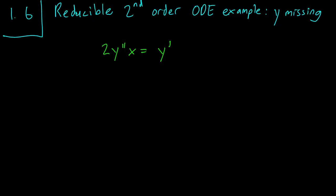Hello class. This is chapter 1.6 and in this video we are going to go through an example of reducing a second-order differential equation. This is the case where the y term is missing. So we have a second-order ODE that goes like this: 2y double prime x equals y prime.